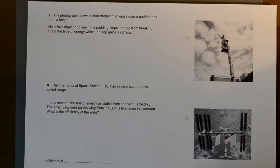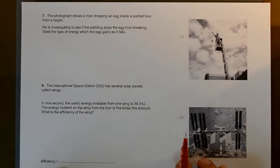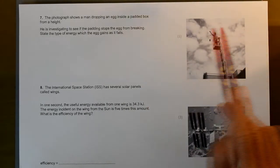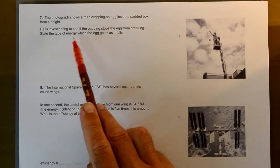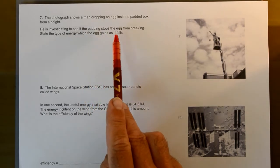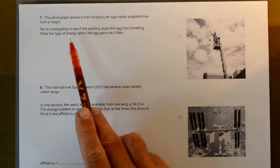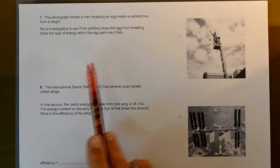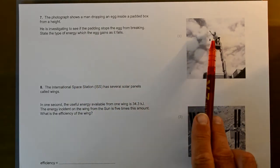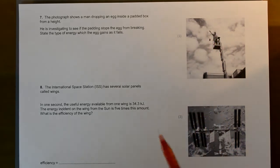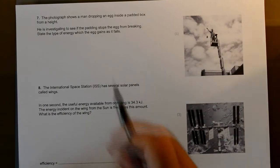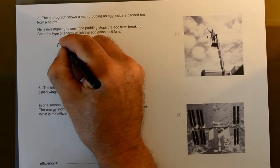Question 7: The photograph shows a man dropping an egg from inside a padded box from a height. He's investigating to see if the padding stops the egg from breaking. State the type of energy the egg gains as it falls. Okay, that's fairly straightforward. It's got gravitational potential, but it gains kinetic energy. So the type of energy it gains is kinetic energy.